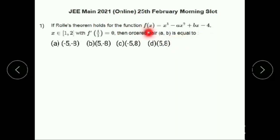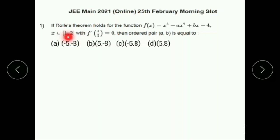Here, given that f(x) = x³ - ax² + bx - 4, where x belongs to [1, 2]. According to Rolle's theorem, f(1) = f(2).